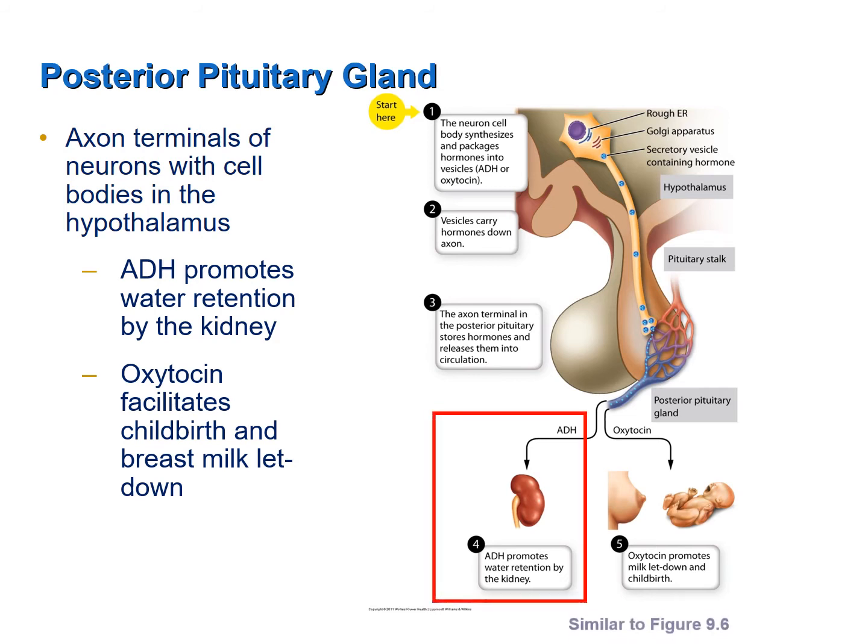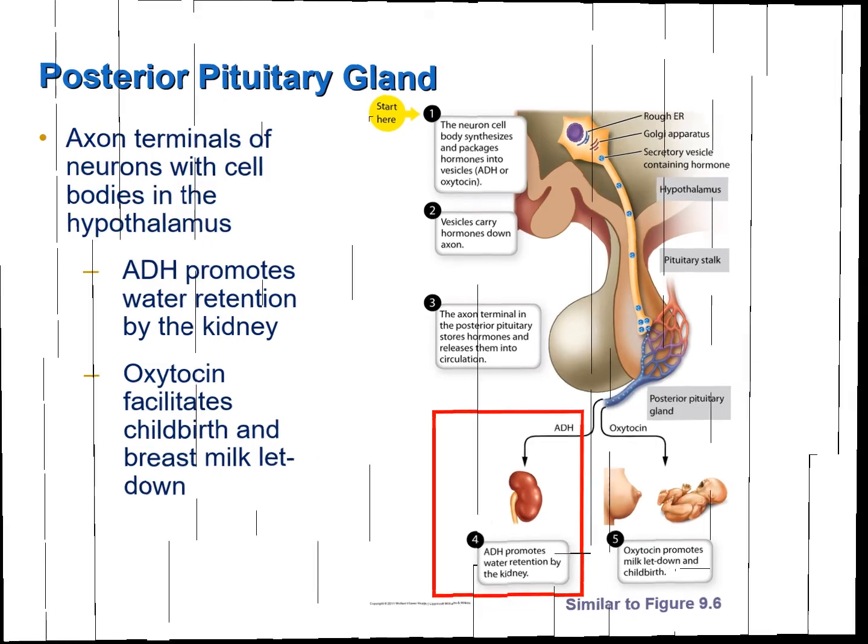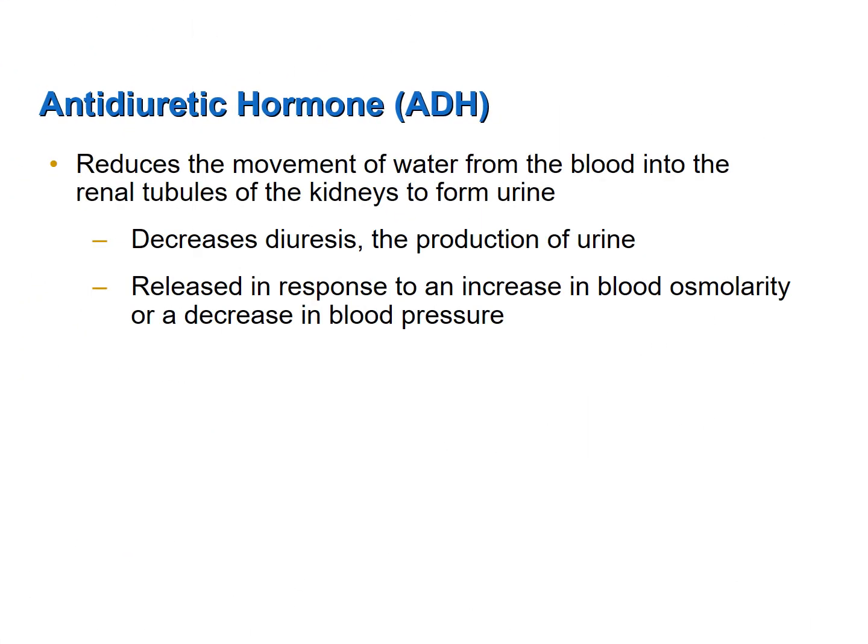Antidiuretic hormone, abbreviated ADH, reduces the movement of water from the blood into the renal tubules of the kidneys to form urine. Diuresis is the production of urine. Antidiuretic hormone therefore decreases diuresis — it decreases the production of urine.